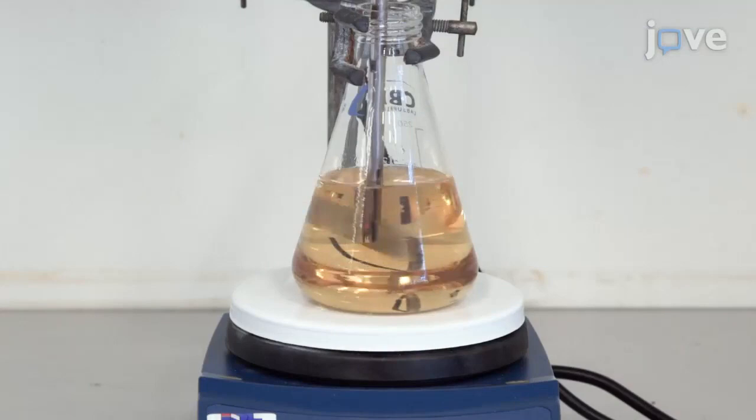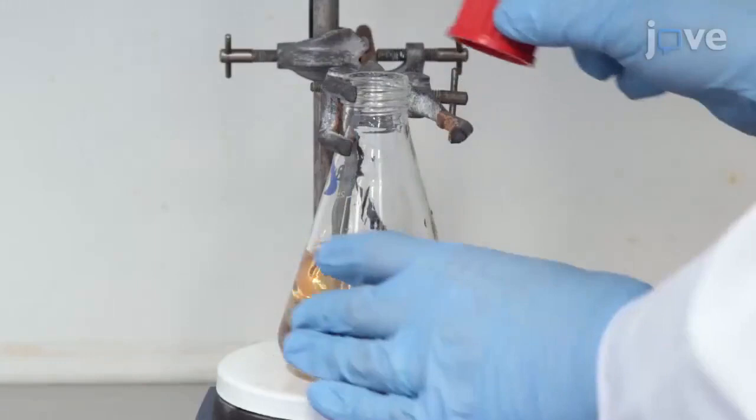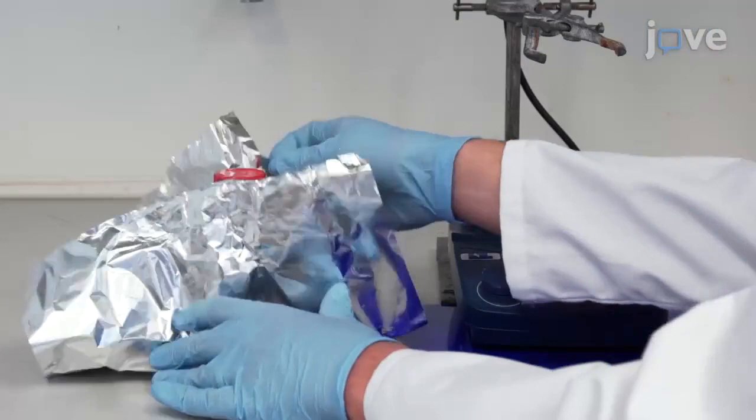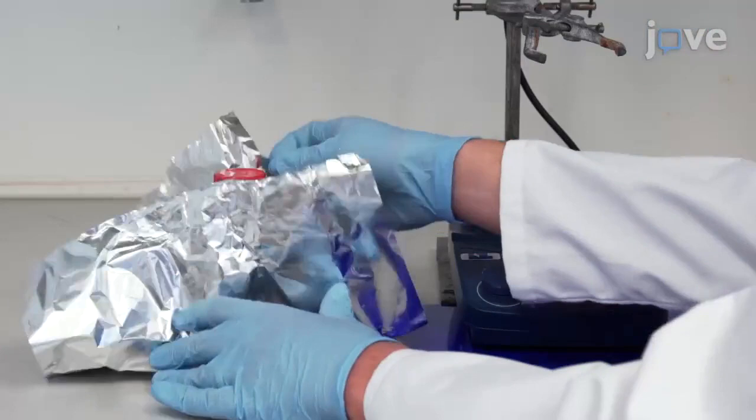Remove the mechanical stirrer and fit the flask with a stopper. Wrap the flask in aluminum foil to protect the bio-based acrylate photopolymer resin from light.